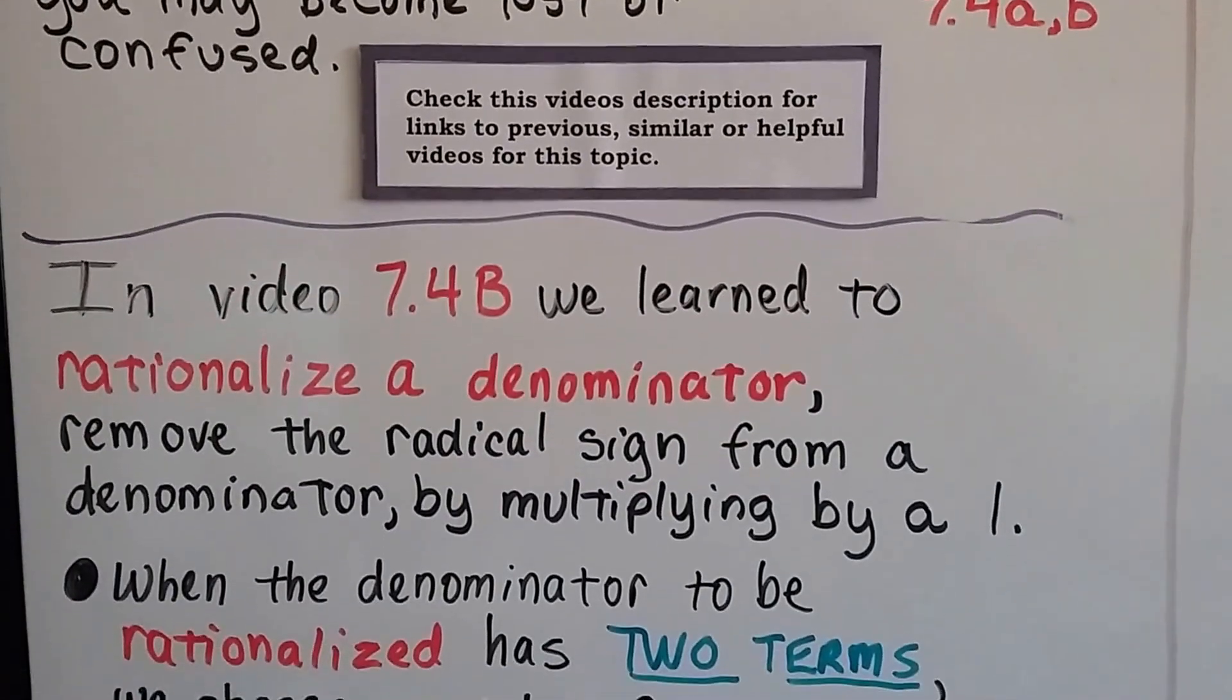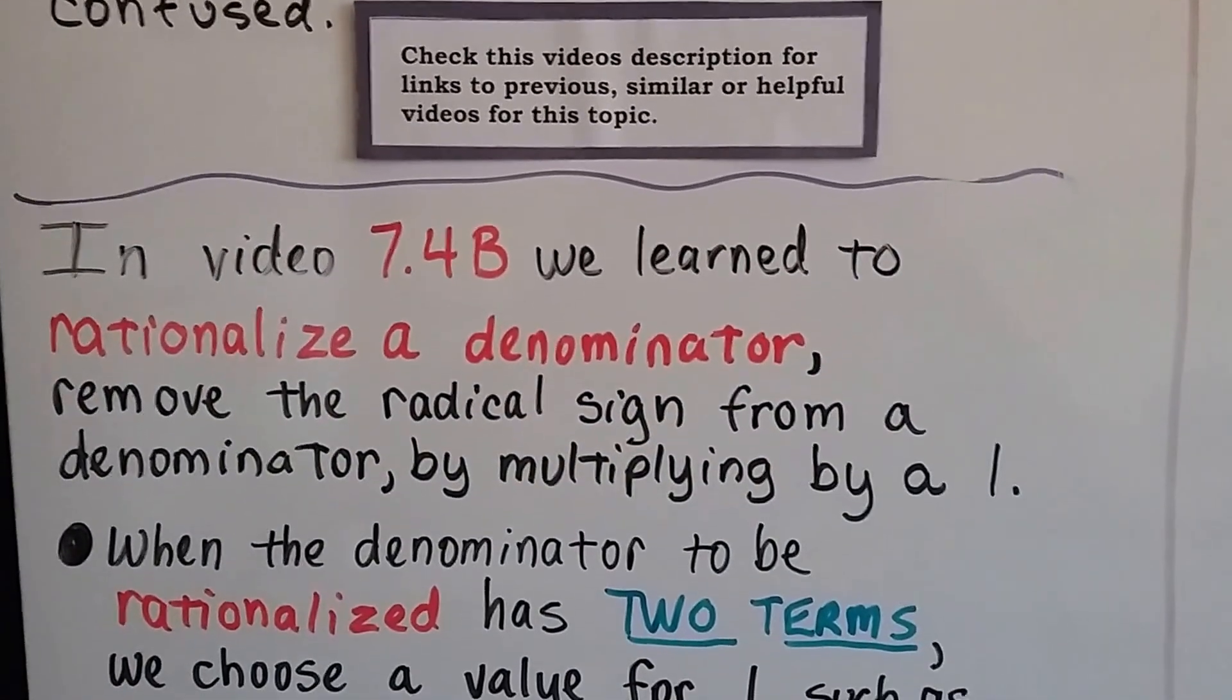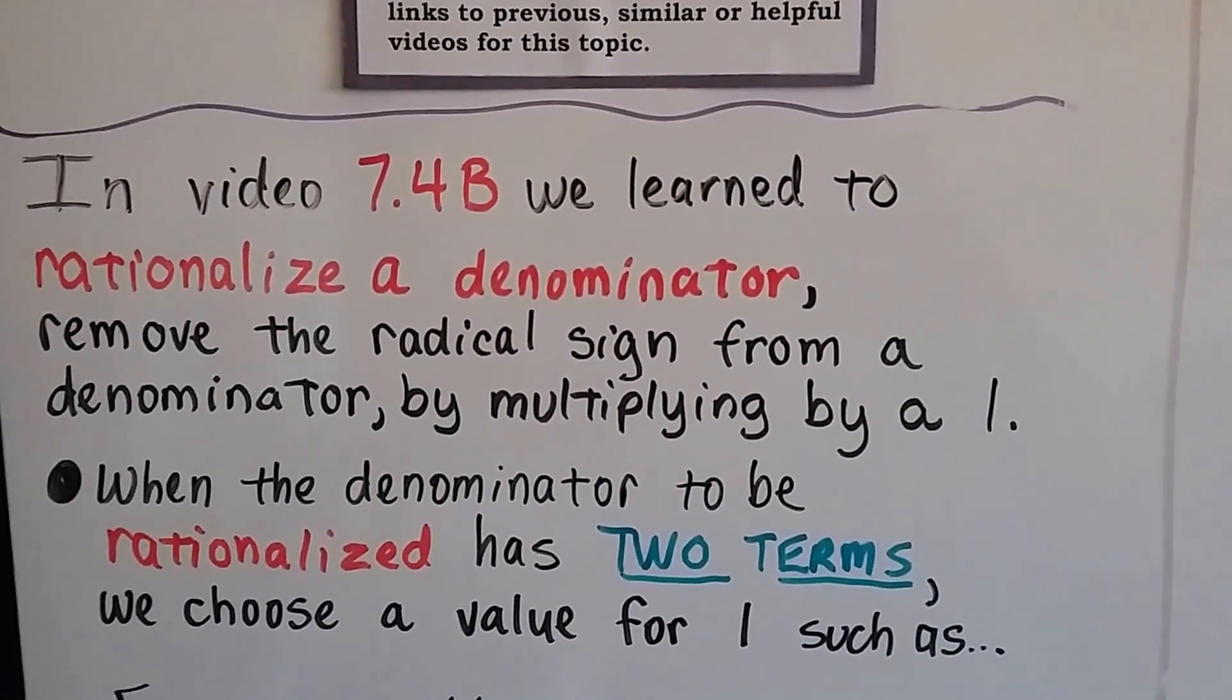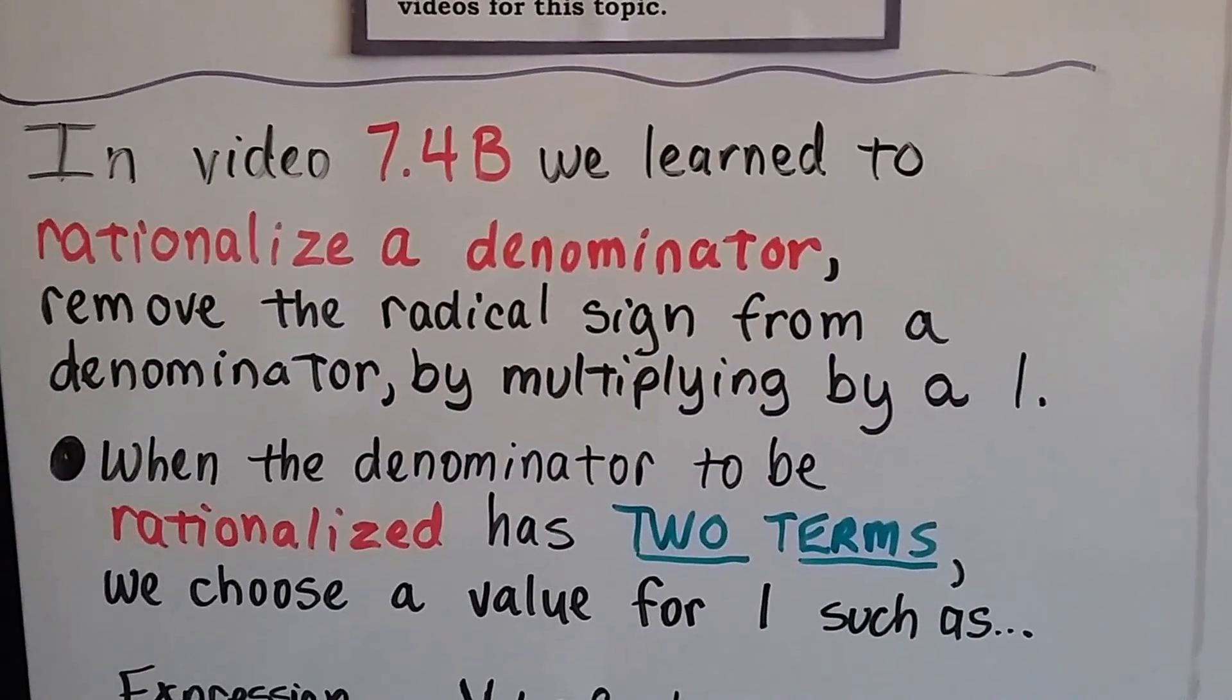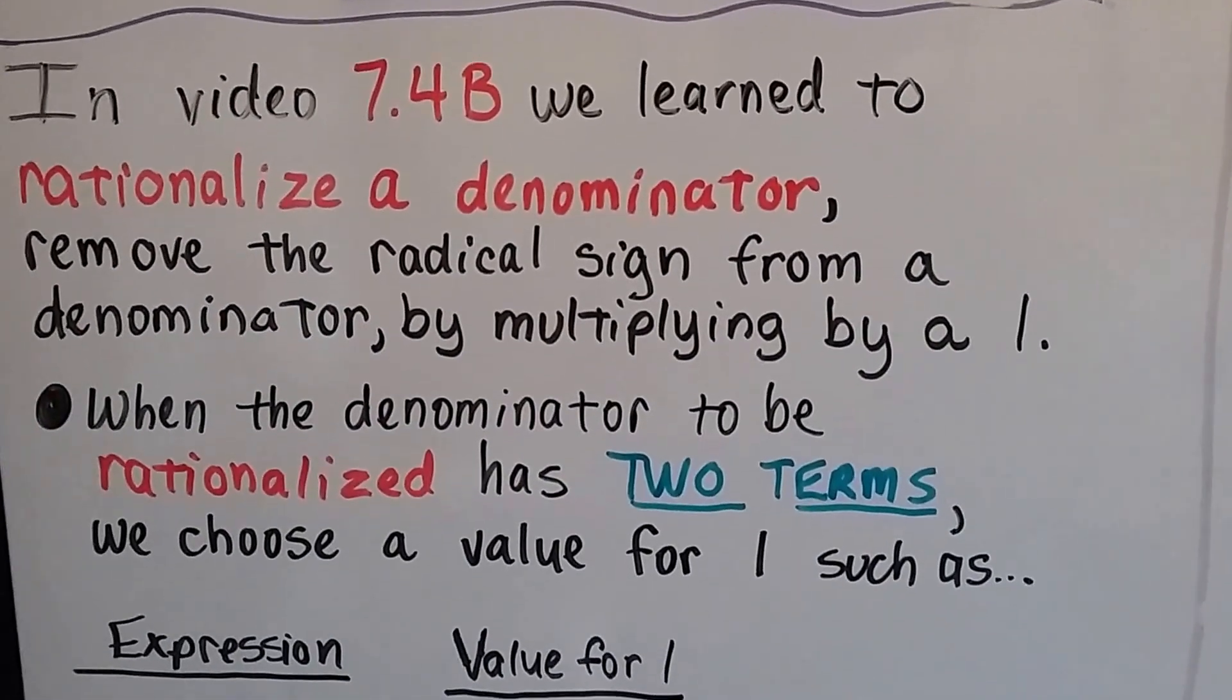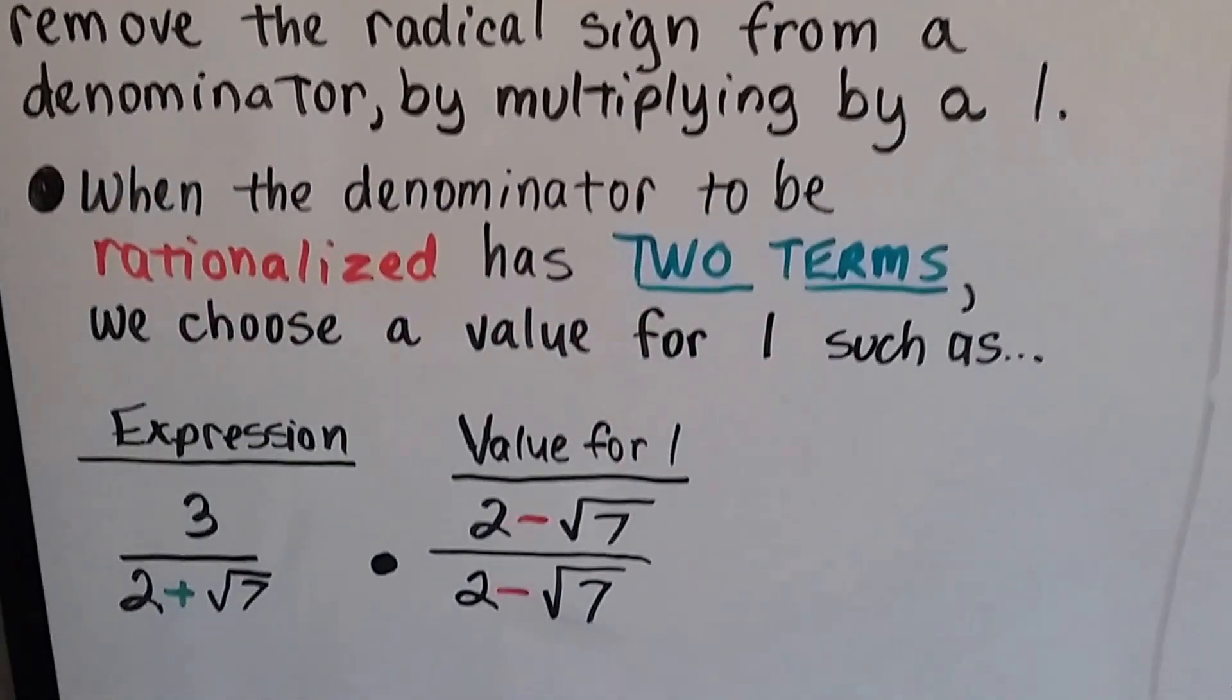In video 7.4b, the one right before this one, we learn to rationalize a denominator. Remove the radical sign from a denominator by multiplying by a 1. When the denominator to be rationalized has two terms, we choose a value for 1 such as these.